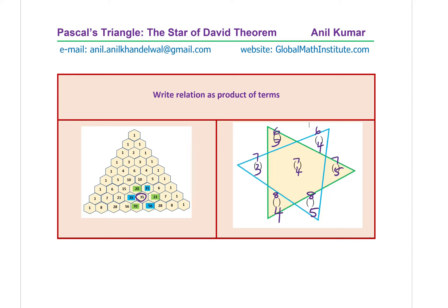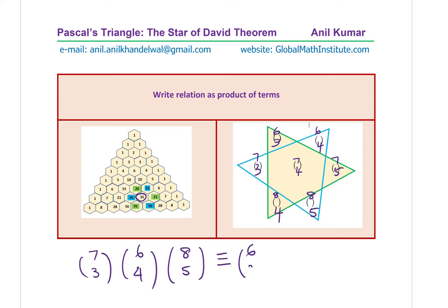We can write the product statement: C(7,3) × C(6,4) × C(8,5) equals C(6,3) × C(7,5) × C(8,4). That is, 8 choose 5, in the blue set, equals the product of the green set: 6 choose 3, 7 choose 5, and 8 choose 4. Their product, as we have seen, is exactly the same.